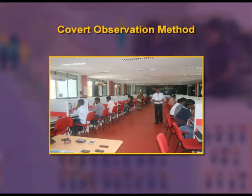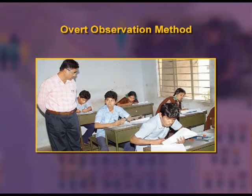In covert observation, investigators do not identify themselves — they either mix with subjects undetected or observe from a distance. For example, in an examination center the observer watches the situation from a distance. In overt observation, the observer has an identity as an investigator, and the purpose of the observation is explained at the time of observation. For example, in an examination center the investigator comes close to observe, and examinees are acquainted with the identity and purpose of the investigator.